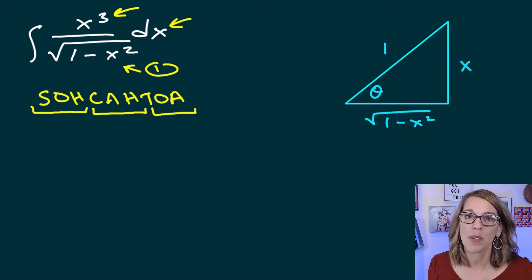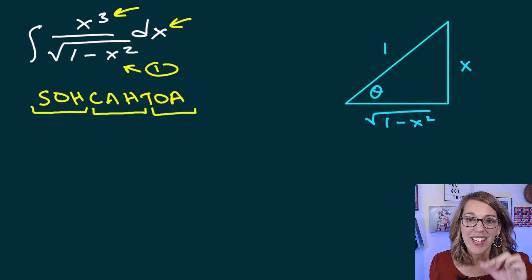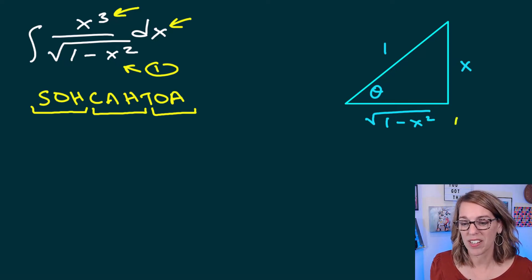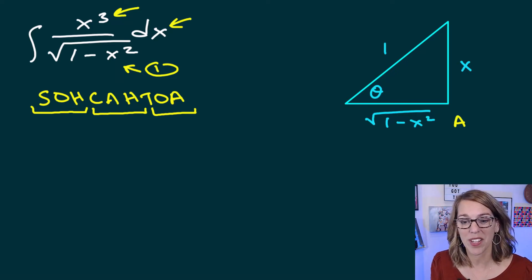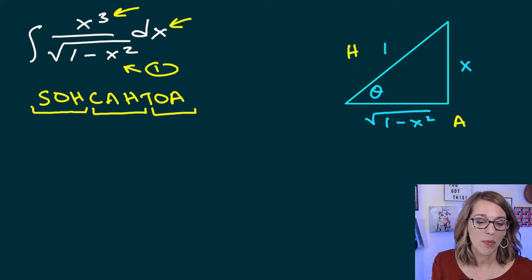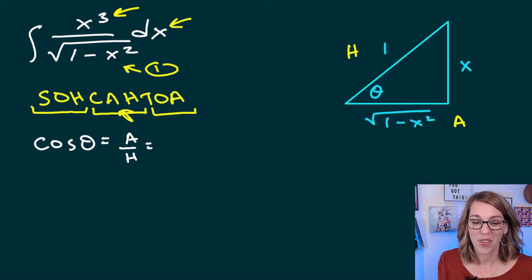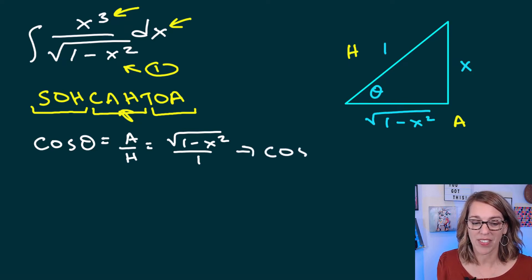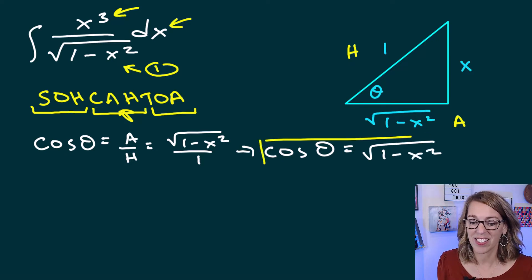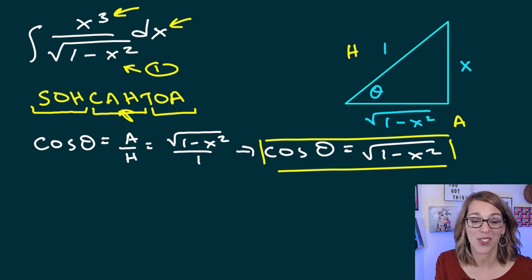Looking at the square root of 1 minus x squared in relation to theta: it's on the adjacent side. I want to combine it with the hypotenuse 1, not with x. Adjacent over hypotenuse is cosine, so cosine of theta equals the square root of 1 minus x squared divided by 1, which simplifies to cosine(θ) = √(1 − x²). That's substitution number one.